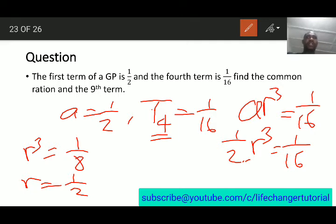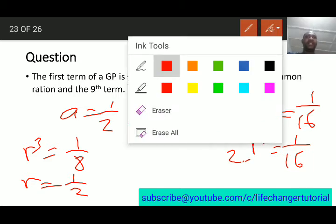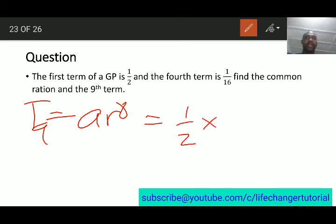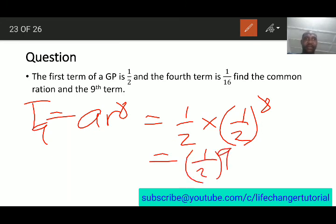So, the next question says we should find the 9th term. So, the 9th term is supposed to be ar^8. So, my a is already half from the question times r. We just got r also to be half. So, half raised to power 8. So, half times half raised to power 8 can be written as half raised to power 9. So, you can use your calculator to achieve that.